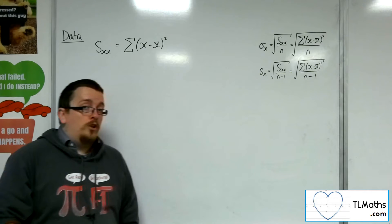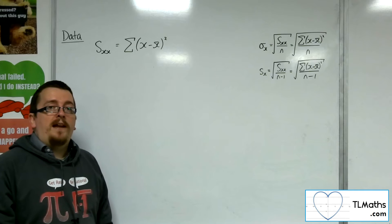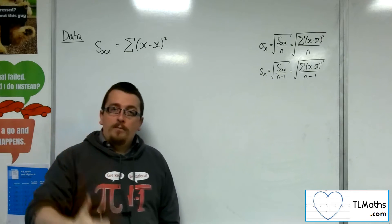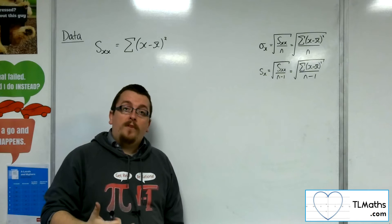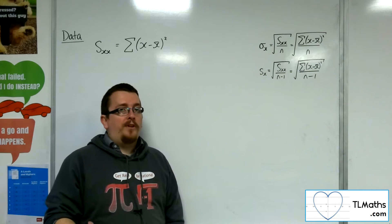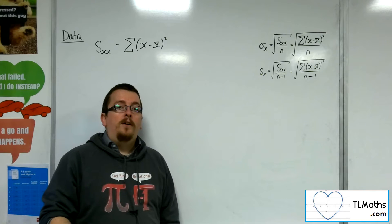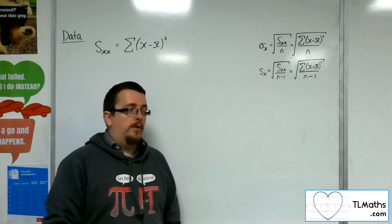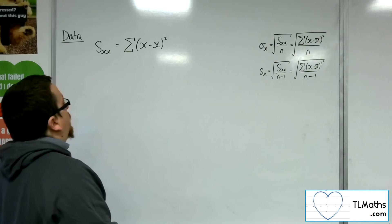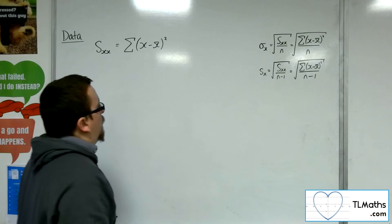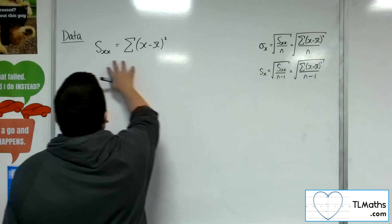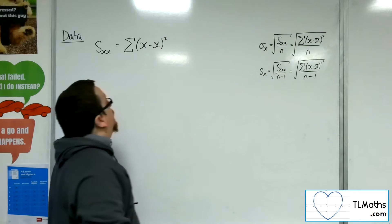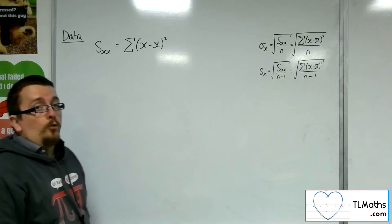This is an extension, so you don't need to replicate where this comes from. But in your formula booklet and your notes, you will see that there is an alternative formula for the standard deviation which you need to know how to use. So this is where it comes from. I'm going to start off with the SXX formula as it stands: summation of x minus x-bar, all squared.